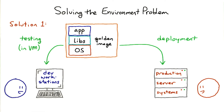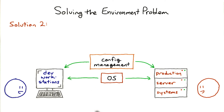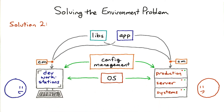You can also create golden images of containers. Another approach is to just install a base operating system, and then use a configuration management system that performs automatic installation and configuration of software on every machine under its control, thus making sure that all the machines have the same configuration. To be sure of that, the installation should start from the same base OS image. Otherwise there could be OS level differences.